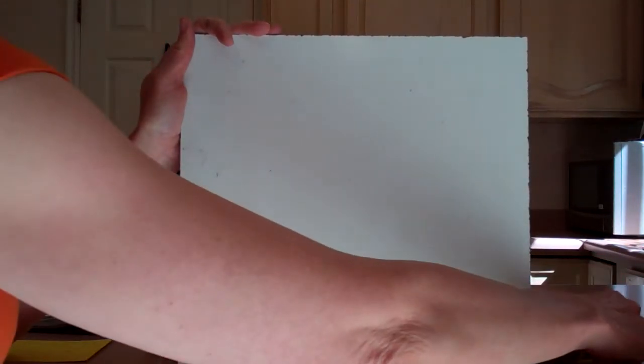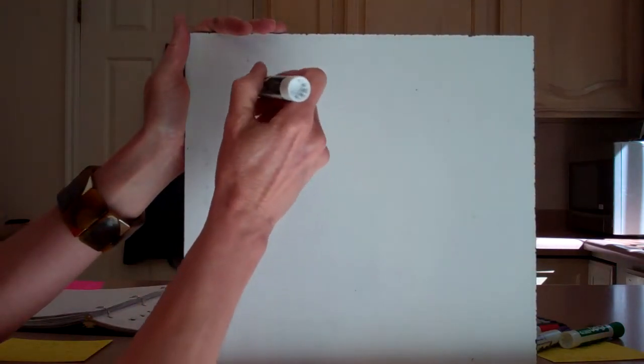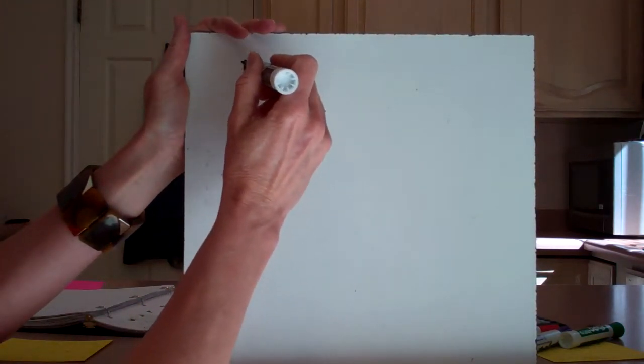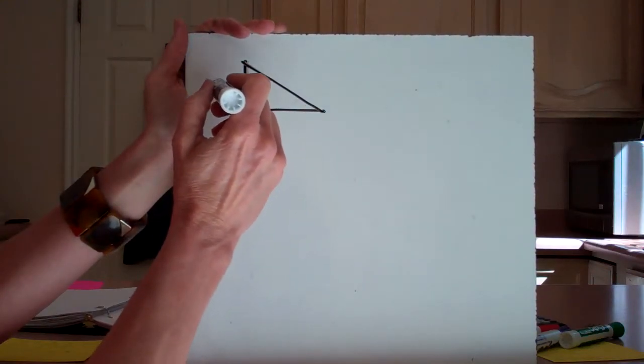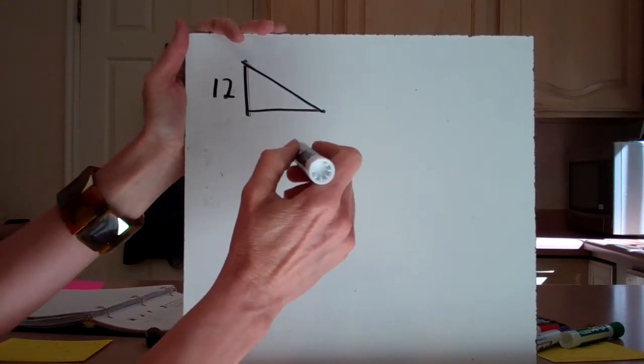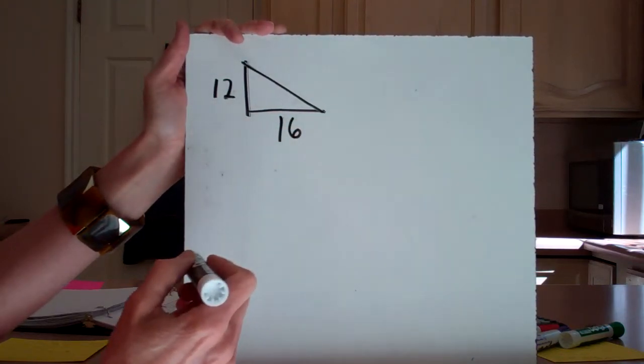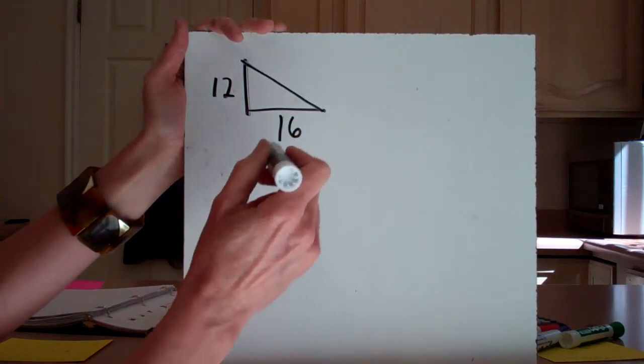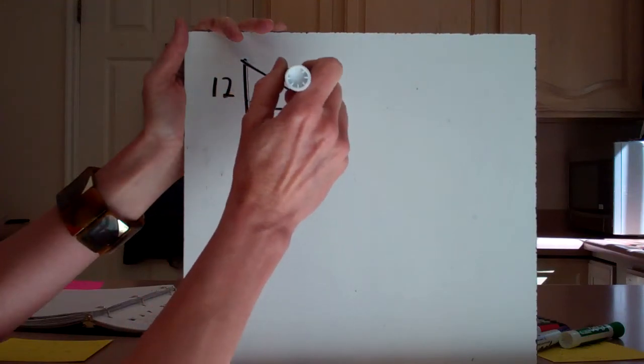Let's say you were given a problem like this. One leg is 12 units and the other leg is 16 units, and we are solving for the hypotenuse this time, which is a little easier. We're solving for C.